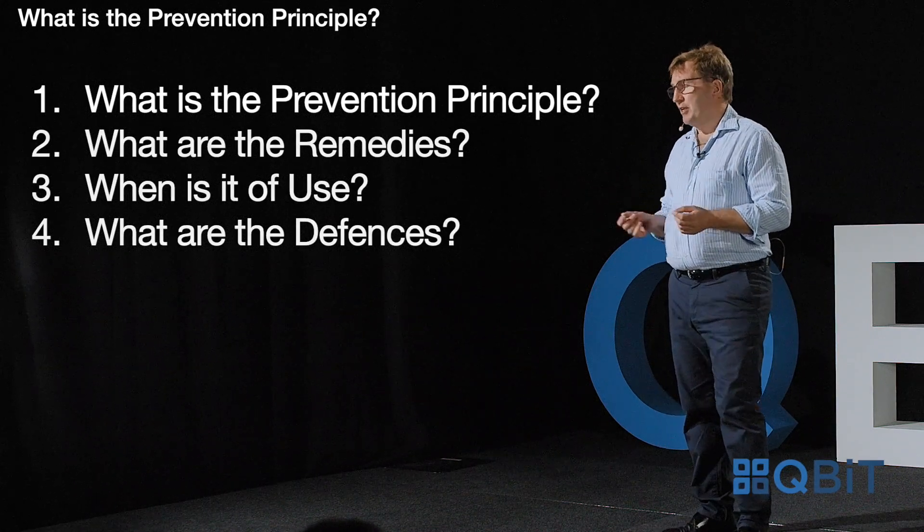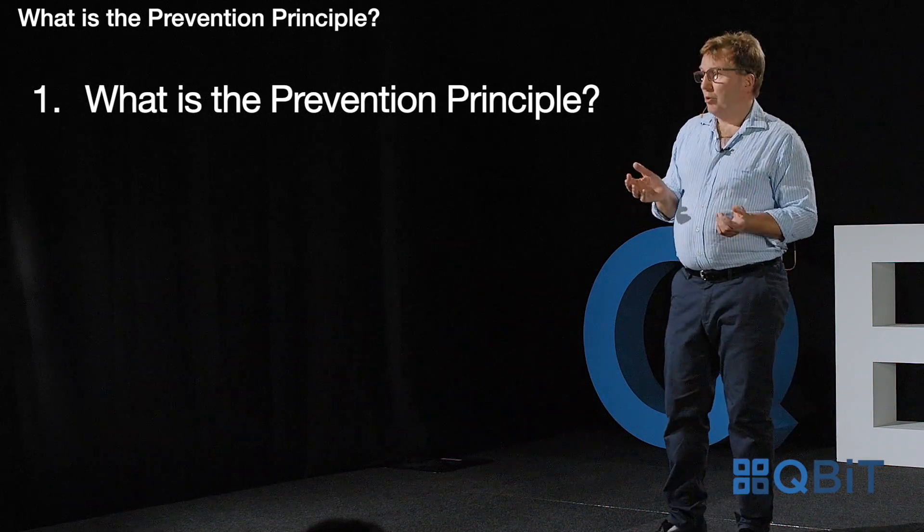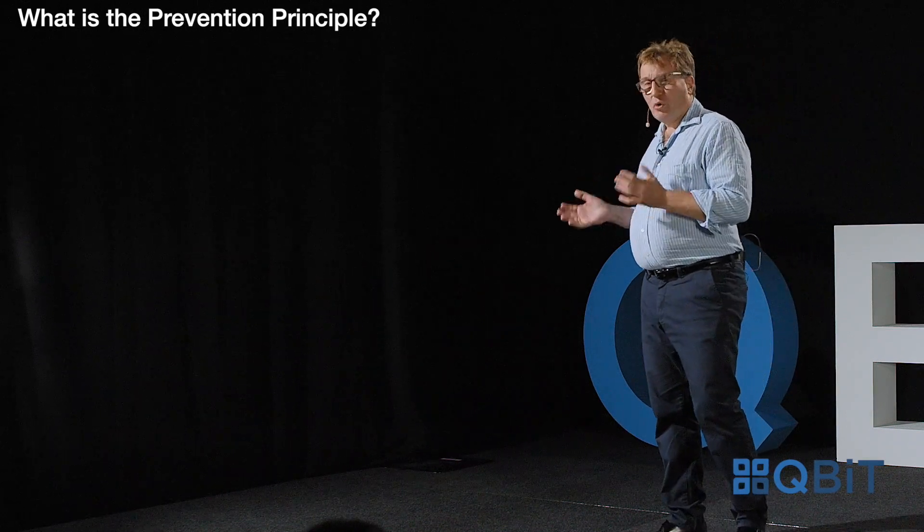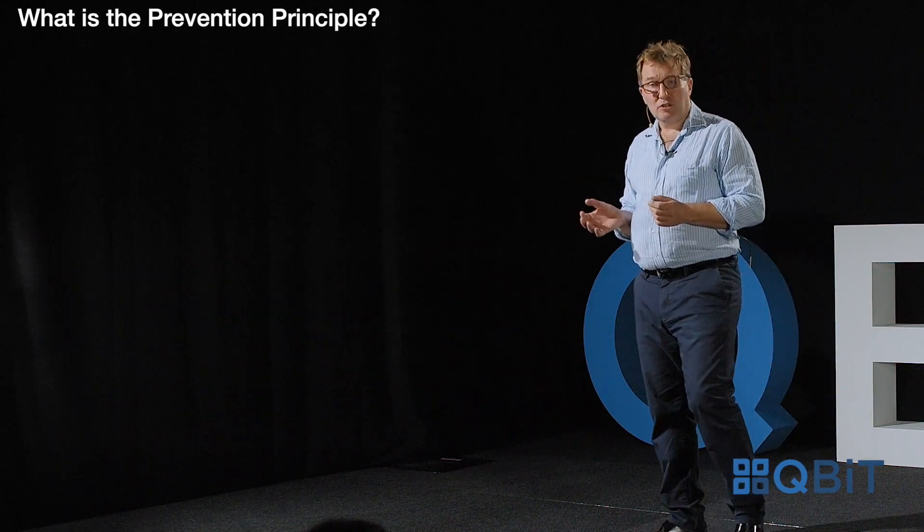There is a debate in English law as to whether the principle is a rule of law or a question of the construction of the particular contract, but most of the time we don't need to worry about that debate. However, it seems to be settled that the principle is one which arises as a matter of construction of the relevant contract, and it follows that the terms of the contract are therefore going to be important in determining the scope of the principle in any particular case.